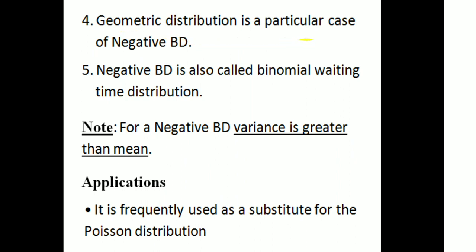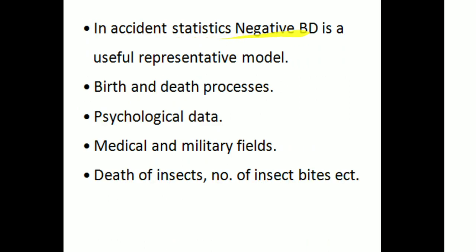Geometric distribution is a particular case of negative binomial distribution. Negative binomial distribution is also called the binomial waiting time distribution. For negative binomial distribution, variance is greater than mean. It is frequently used as a substitute for the Poisson distribution. In accident statistics, it is a useful representative model. It is also applied in birth and death processes, psychological data, medical and military fields, deaths of insects, and number of insects by species.